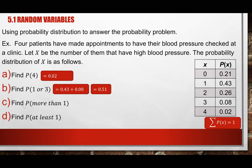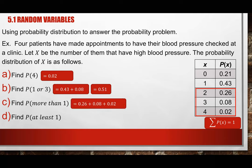To find the probability of more than 1, we need values where x > 1 — that means 2, 3, and 4 patients. We do not include 1. Adding the probabilities: P(2) + P(3) + P(4) = 0.26 + 0.08 + 0.02 = 0.36. So the probability of more than 1 patient having high blood pressure is 36%.